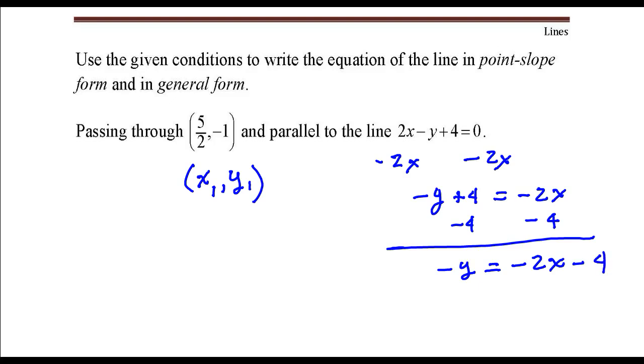And then the last thing is to divide both sides by negative 1 so that y is 2x plus 4. And the slope of this line is the number that's in front of the x which is 2. And that's the slope that we're going to be using to create our line.